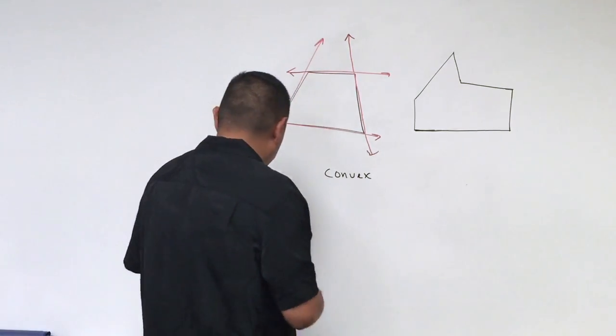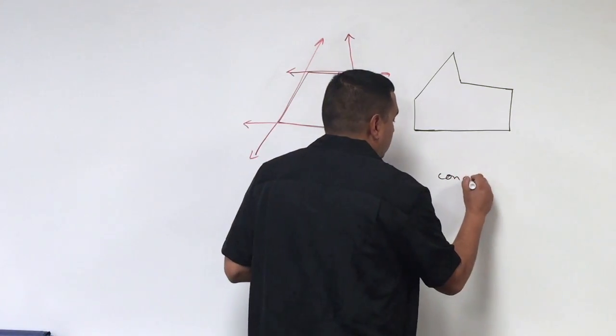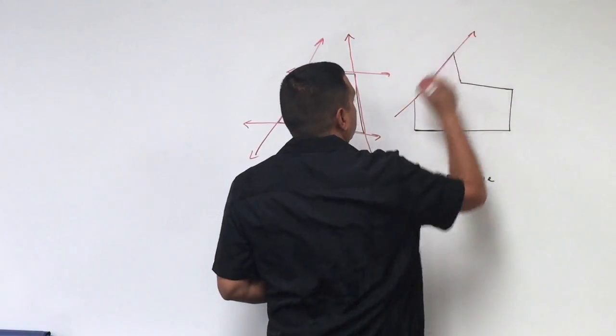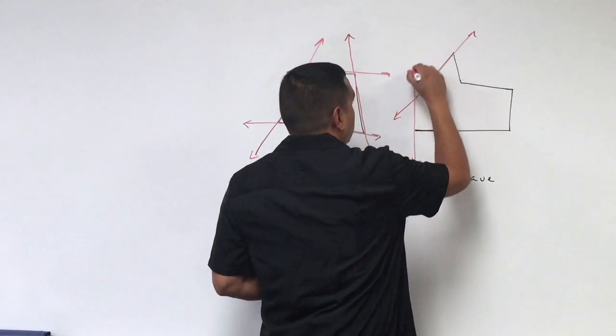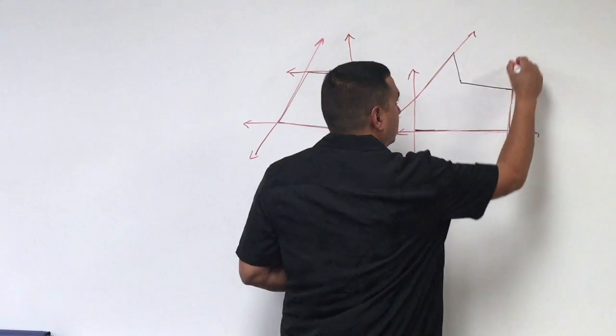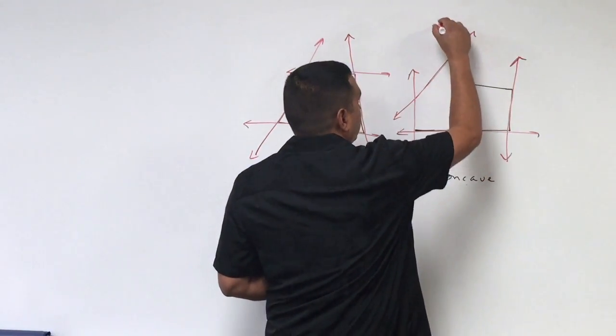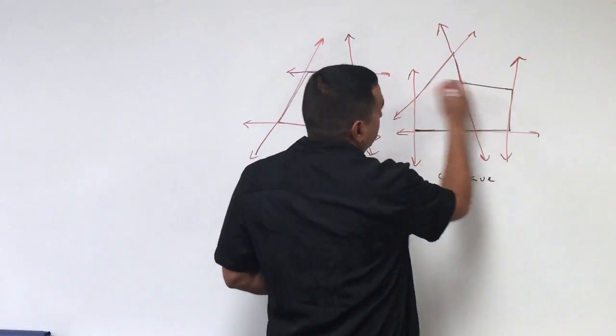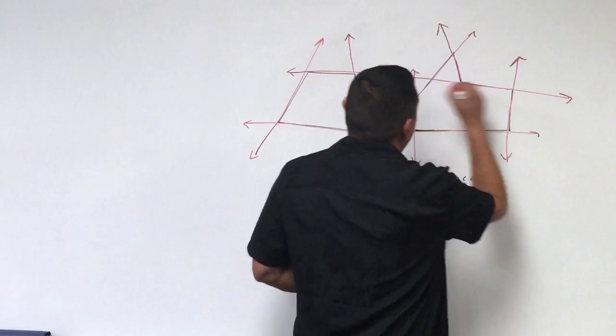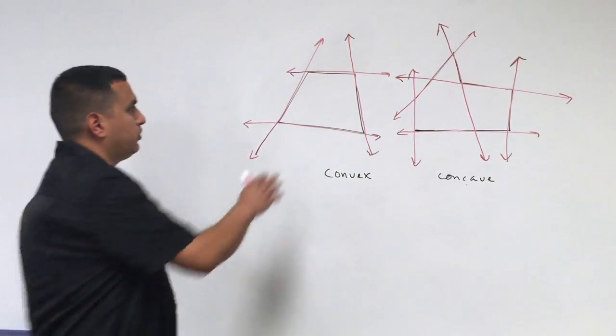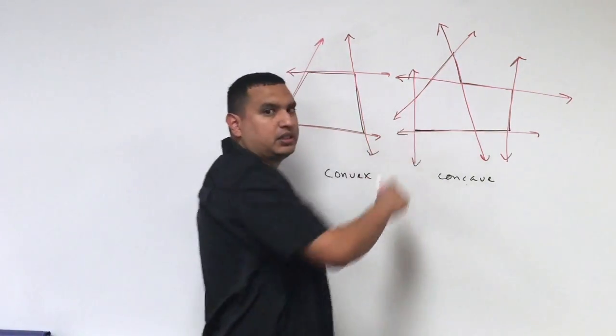Now the other word, concave, that means if I take these sides here, and they cross on the inside, which I would get it right here. And see how this line here cut through the polygon, that means it's concave. I can do the same thing with this line. If I go through here, it cuts inside, or cuts across the polygon. So this would be an example of convex. This would be an example of concave.